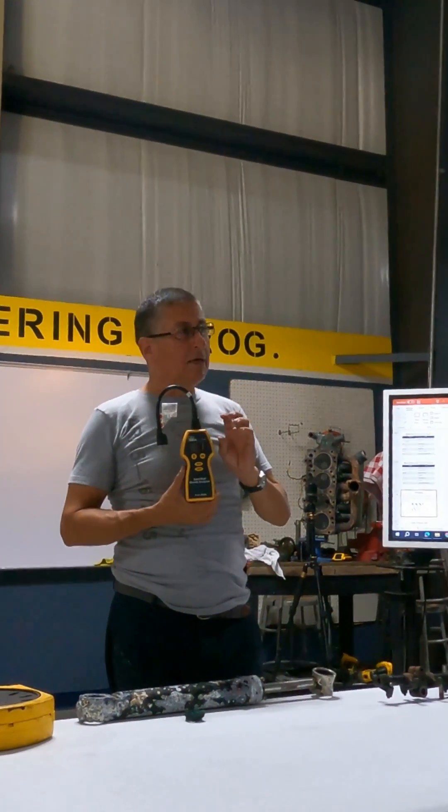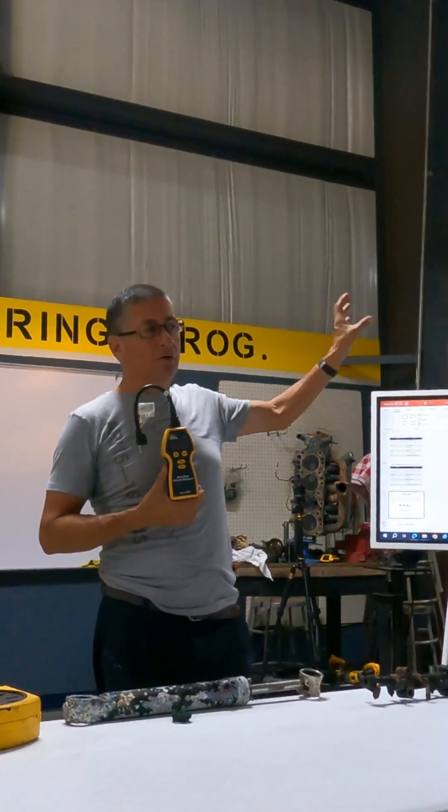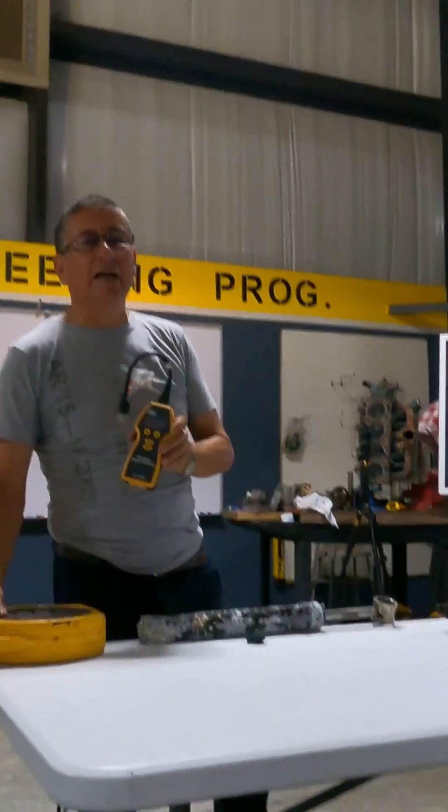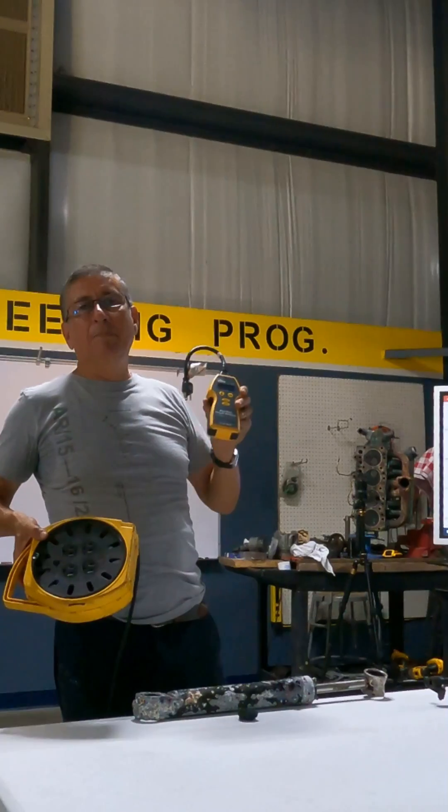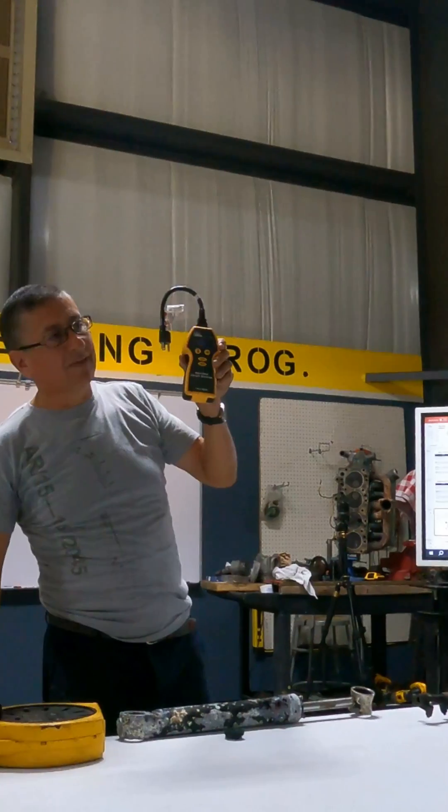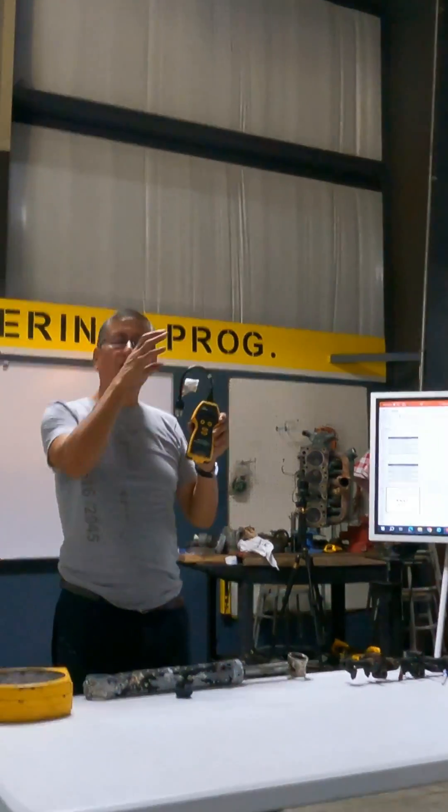I want to show you one outlet pretty close to the main panel of this building. We are going to check later another outlet too far from the main panel with too much voltage drop to verify the voltage drop with this equipment. Okay, let's go and check the outlet close to the panel.